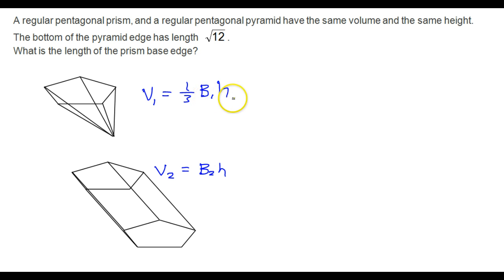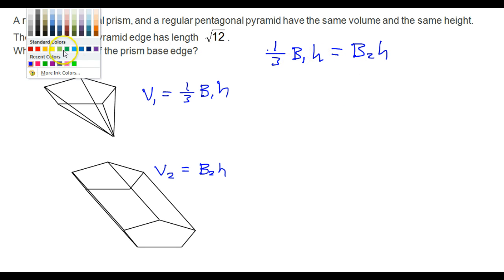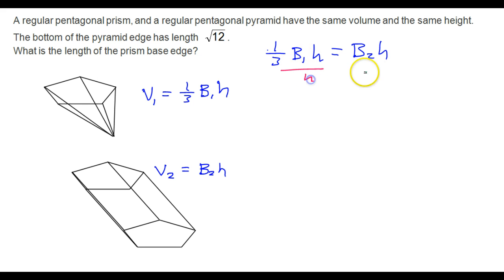So we should be able to set these two equal to each other because it says that they have the same volume. That means that one third B1 H is equal to B2 H. We could divide both sides by the height since they're the same. So the bottom line is that one third the area of the first base is equal to the area of the second base. So this is the key.